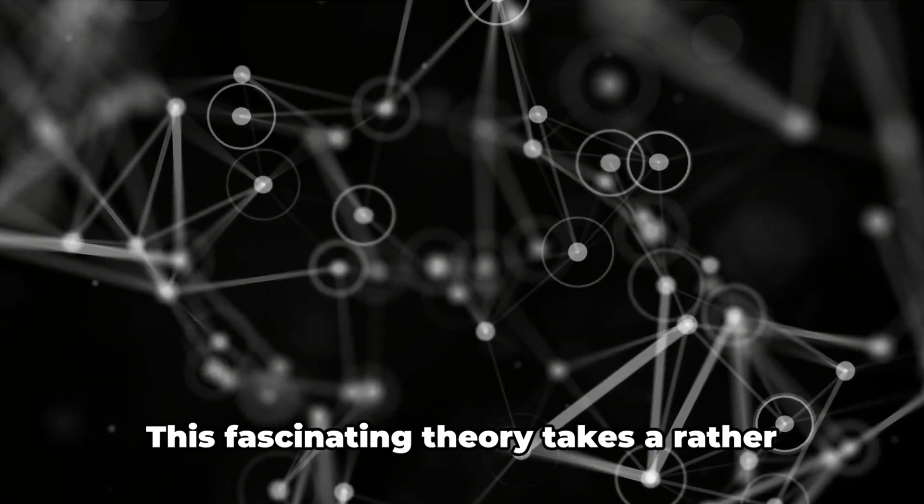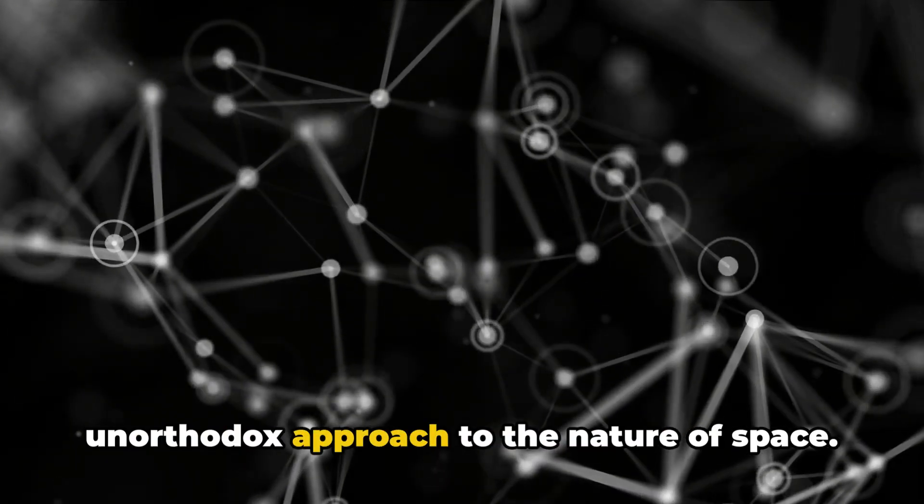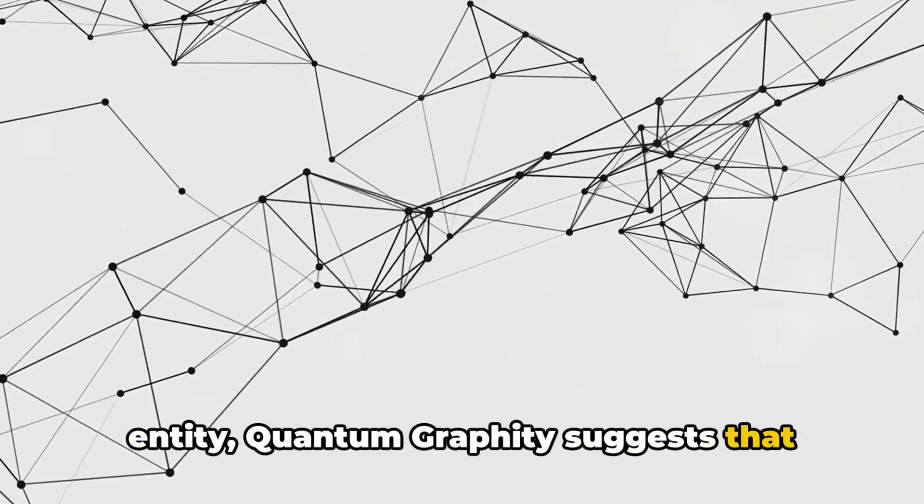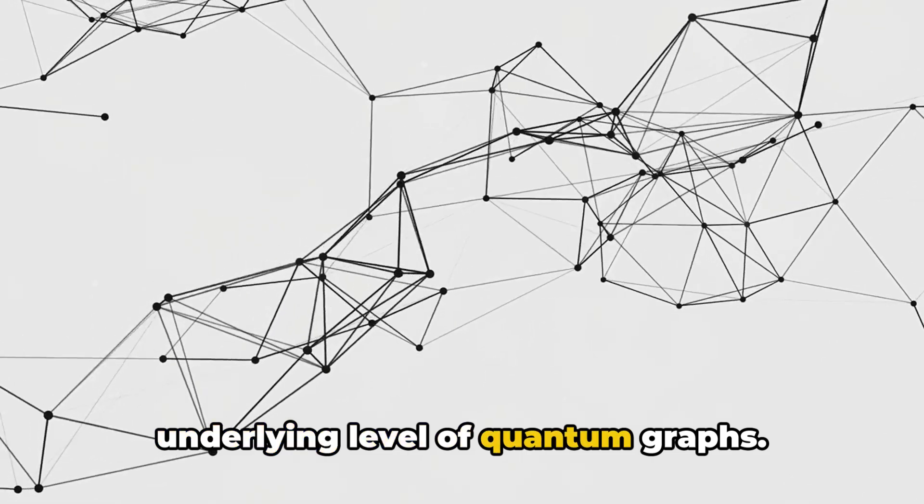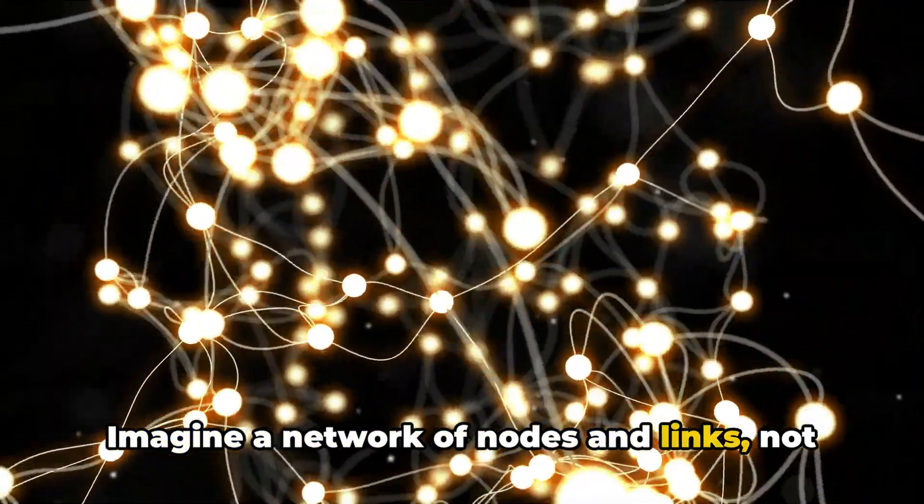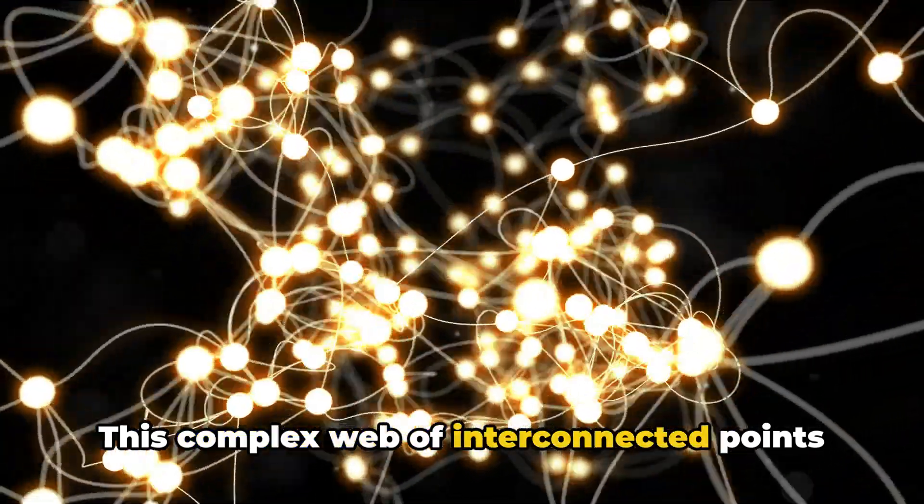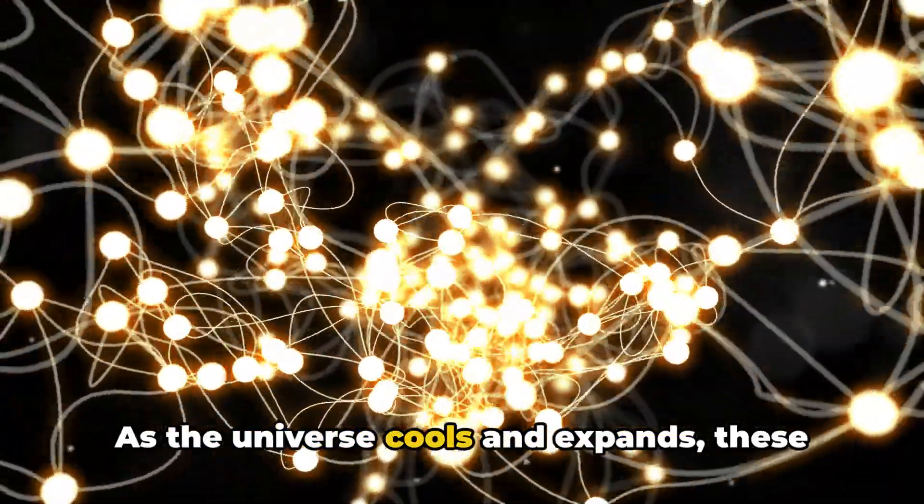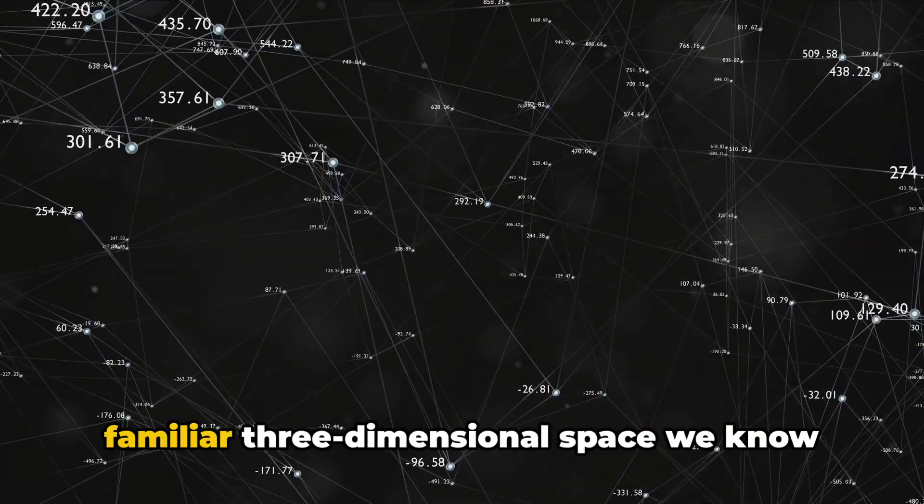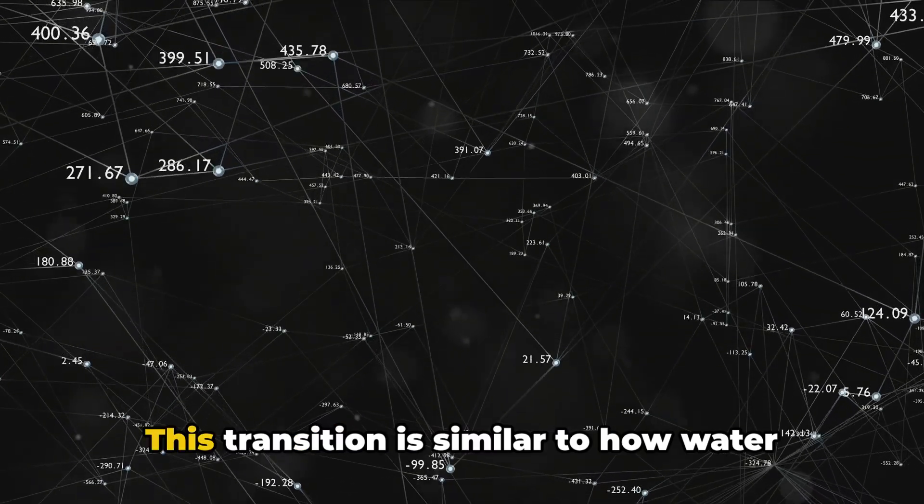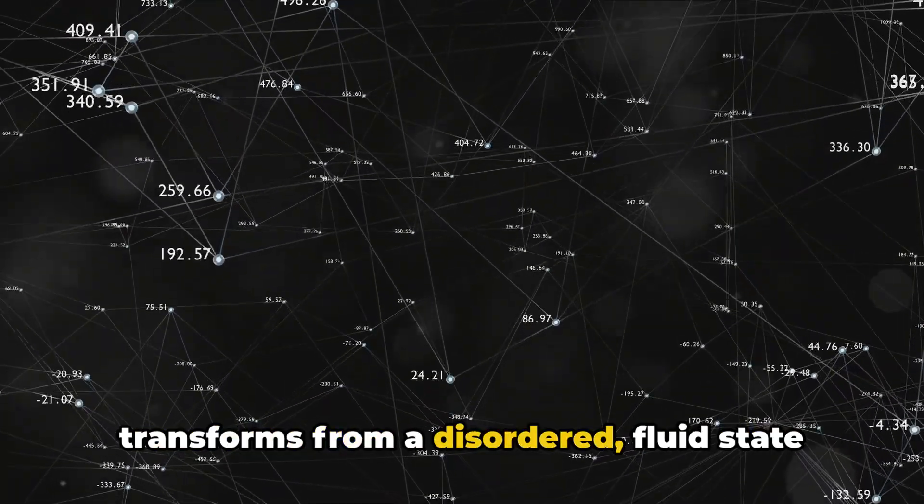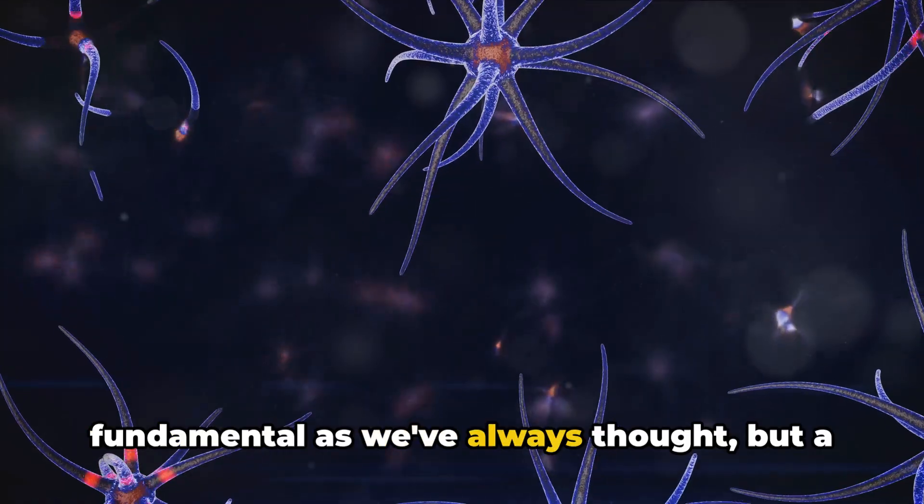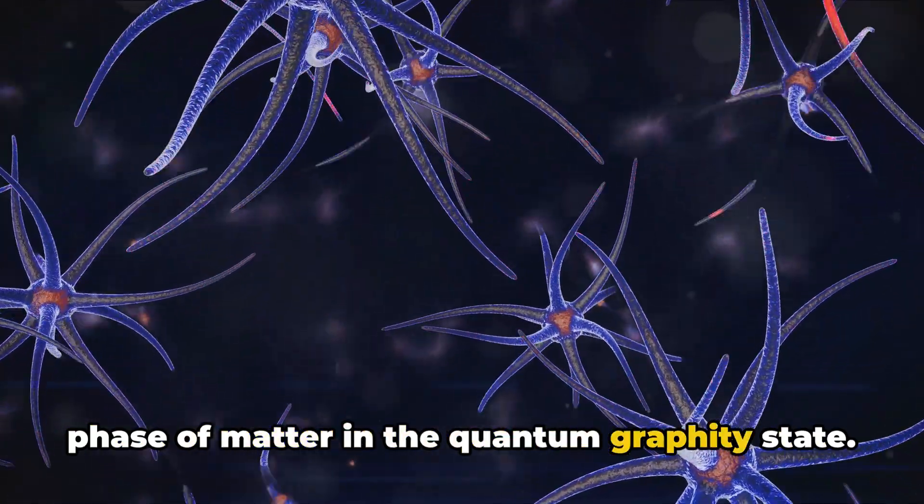At number 7, we have Quantum Graphity. This fascinating theory takes a rather unorthodox approach to the nature of space. Instead of viewing space as a fundamental entity, Quantum Graphity suggests that it's emergent, born from a deeper underlying level of Quantum Graphs. Imagine a network of nodes and links, not unlike the neurons and synapses in our brain. This complex web of interconnected points is what Quantum Graphity theorizes as the building blocks of space. As the universe cools and expands, these Quantum Graphs transition into the familiar three-dimensional space we know and experience.